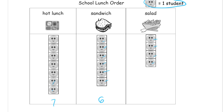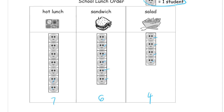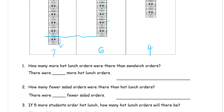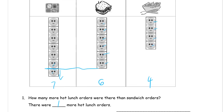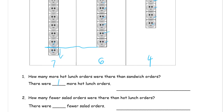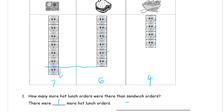Salads look like the least — one, two, three, four of those. How many more hot lunch orders were there than sandwich orders? Just look at the smiley faces. You can see they're about the same, and then there's just one more hot lunch. When comparing — how many more or fewer — we're finding the difference, so we subtract. That would be 7 minus 6 equals 1.